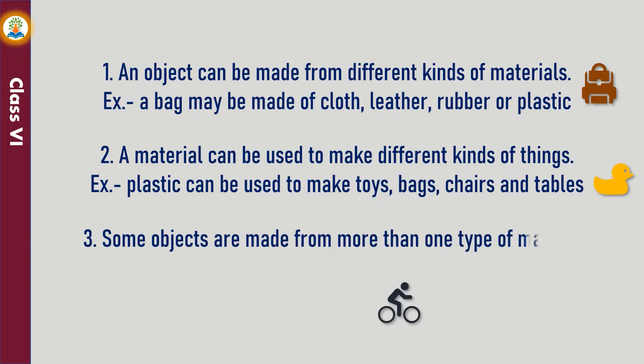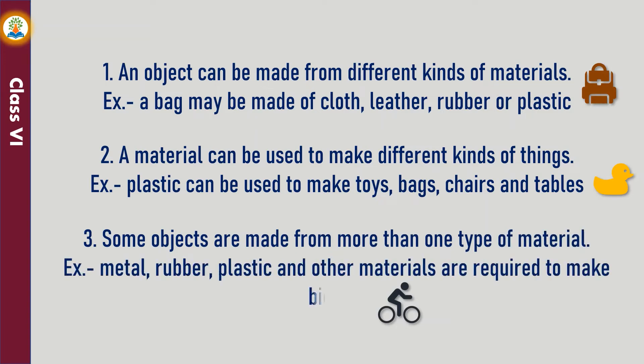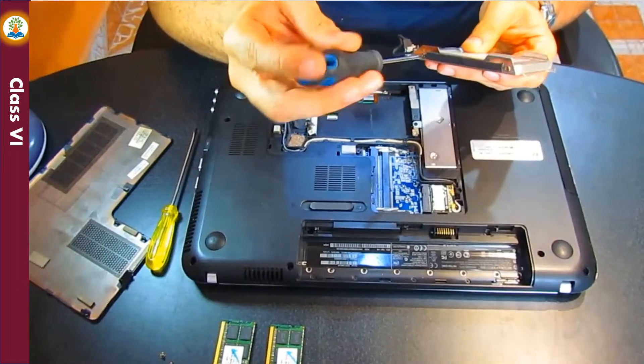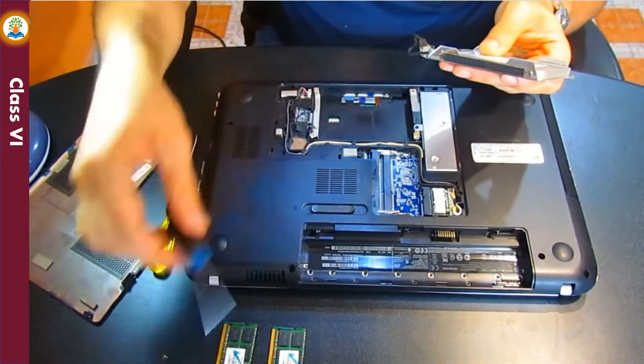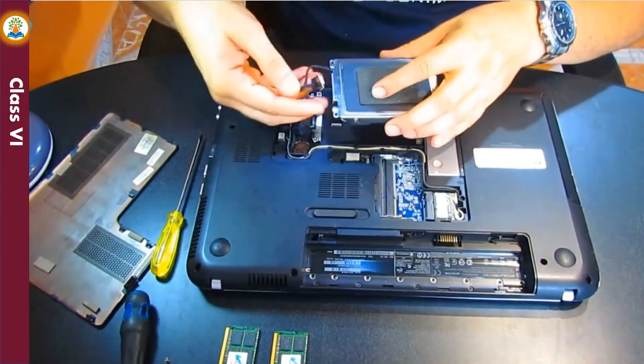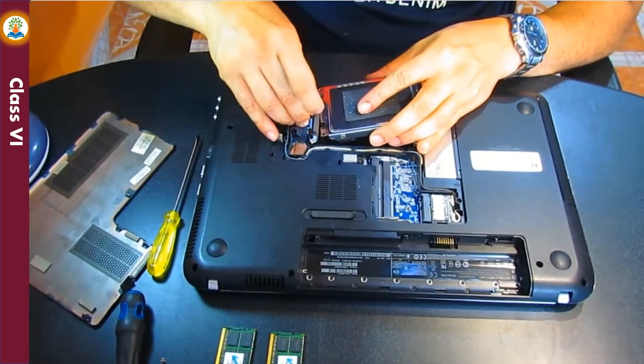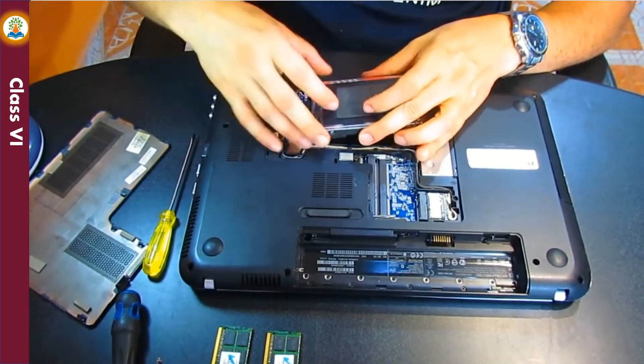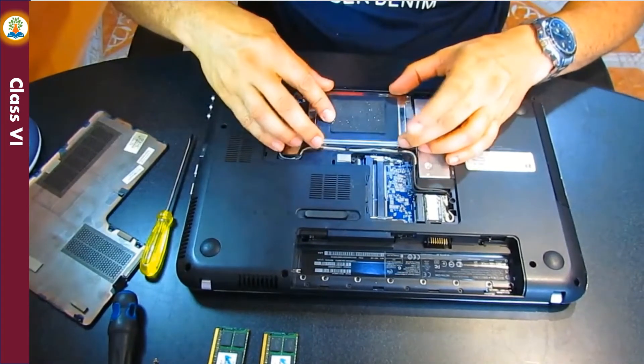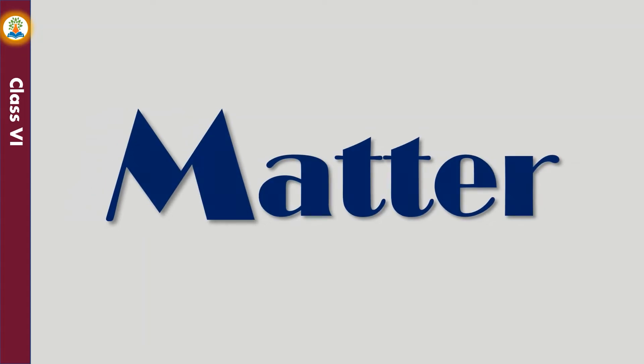Some objects are made from more than one type of material. For example, metal, rubber, plastic, and other materials are required to make a bicycle. There are different materials we make objects with, but how do we decide which material to use for making an object? Before finding an answer to this question, let us see what is there inside a material: matter.